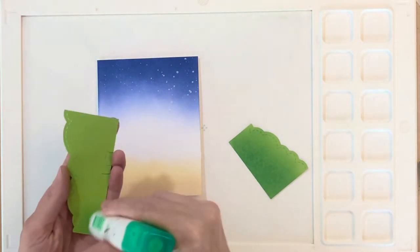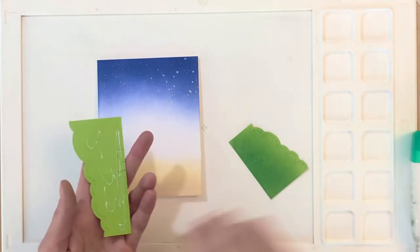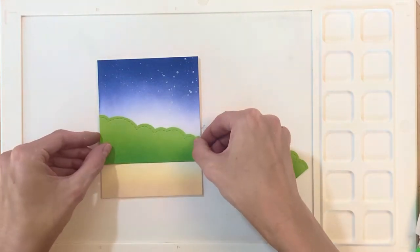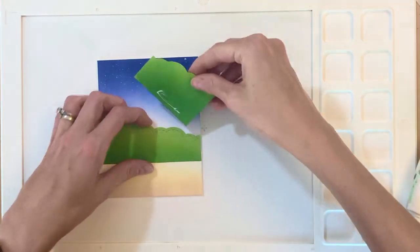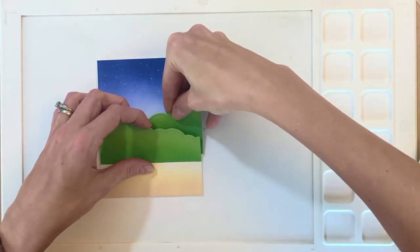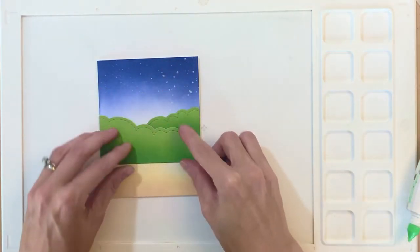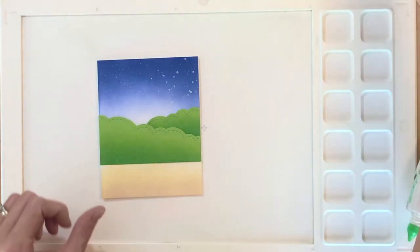I'm now going to use the liquid glue to adhere these two shrubbery layers. I'm going to start actually with the first layer and just stick it right in that center area where there is no ink blending, and then kind of lift it up real quick before the glue has a chance to set to tuck in that back layer of shrubbery.